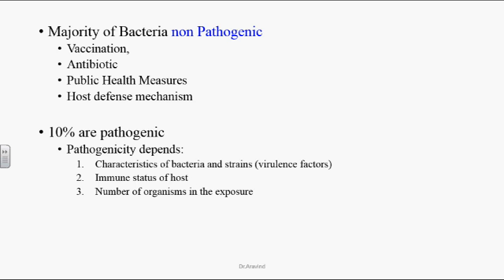The majority of bacteria are not pathogenic in nature because of wide vaccination, antibiotics, public health care measures, and the potent immune system of humans — the host defense mechanisms. Because of all these factors, most of the bacteria can't cause infections. Only about 10% of organisms are pathogenic in nature, and that pathogenicity depends mainly upon the characteristics of bacteria, its virulence nature, the virulent factors present on the bacterial strains, and the status of the immune system of the host.